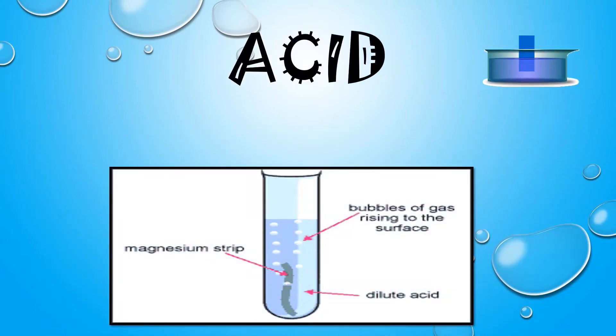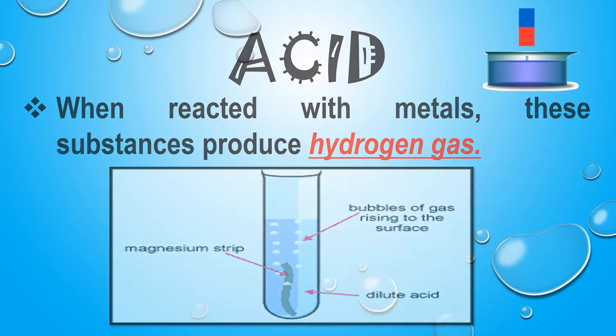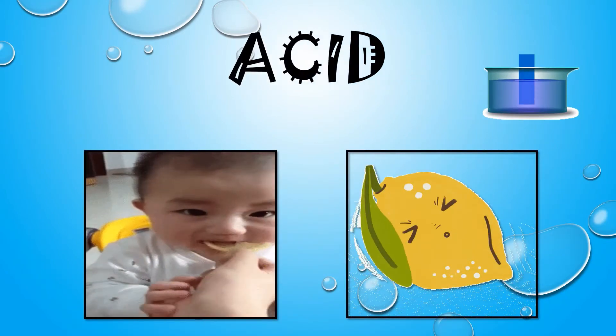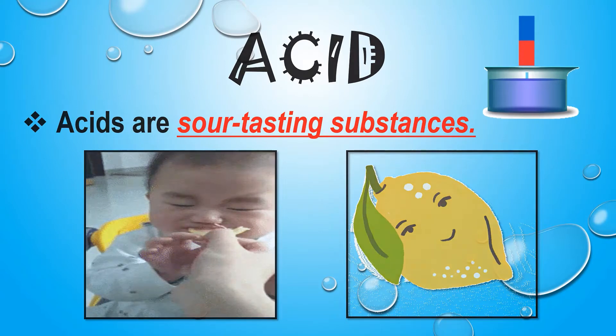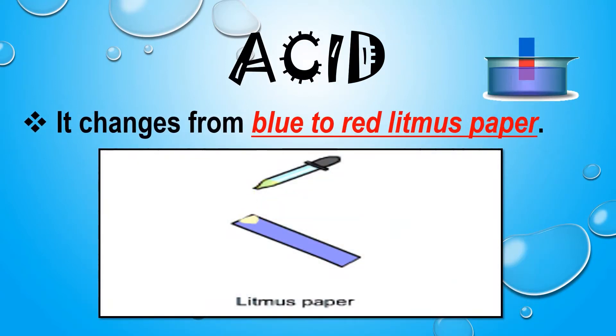When metal reacts with acid, they produce a hydrogen gas. It changes from blue to red litmus paper.